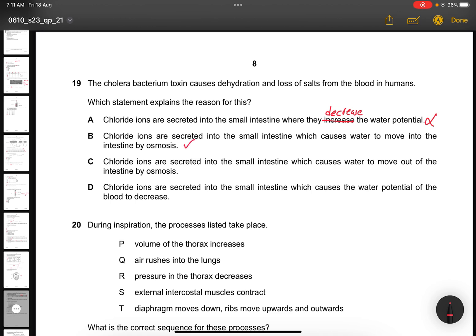Chloride ions are secreted into the small intestine which causes water to move into the intestine by osmosis. Maybe, correct? Chloride ions are secreted into the small intestine which causes water to move out of the intestine? No, it doesn't move out. It should be moving in. Chloride ions are secreted into the small intestine which causes the water potential of the blood to decrease? No, they will never decrease the potential in the blood. So the answer will be B.